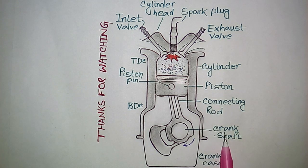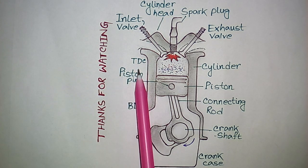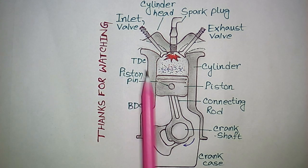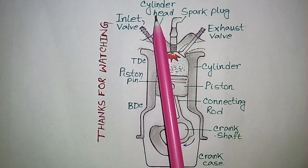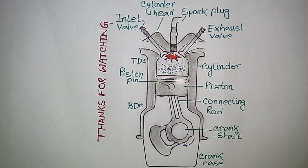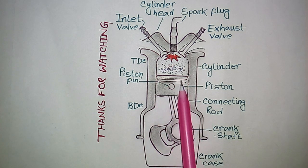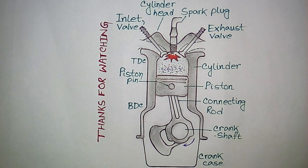Piston, cylinder, connecting rod, crankshaft, crankcase, rotation of crankshaft, bottom dead center, top dead center, piston pin, inlet valve, cylinder head, spark plug, exhaust valve, etc. So let's start one by one. First one is piston — this is the structure of piston.